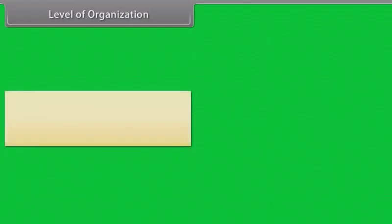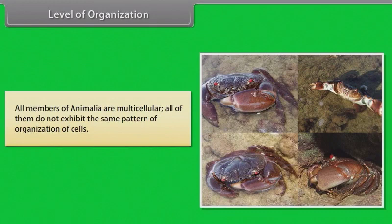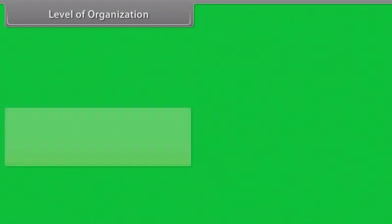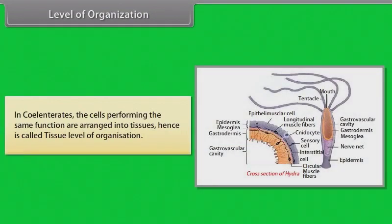Level of organization: All members of Animalia are multicellular, but they do not all exhibit the same pattern of organization of cells. In sponges, the cells are arranged as loose cell aggregates — they exhibit cellular level of organization. In coelenterates, cells performing the same function are arranged into tissues, hence it is called tissue level of organization.